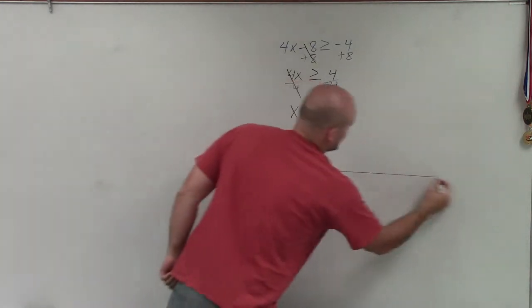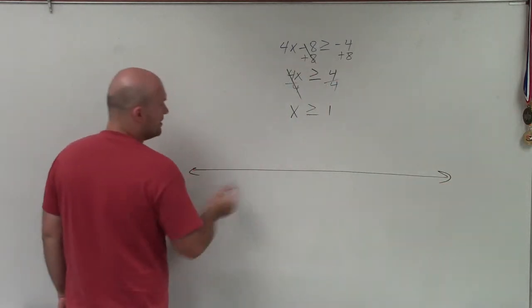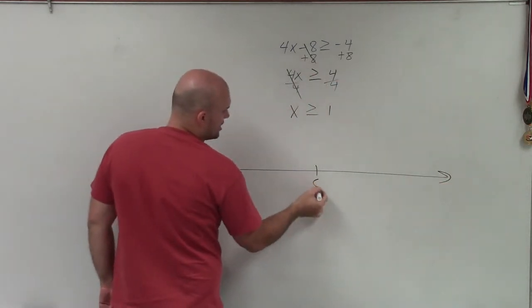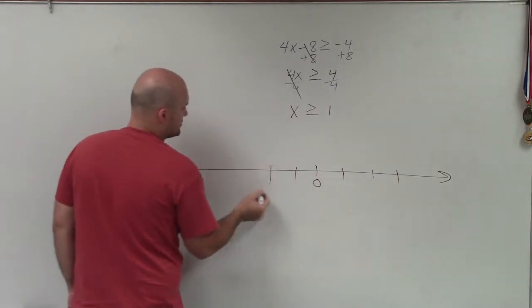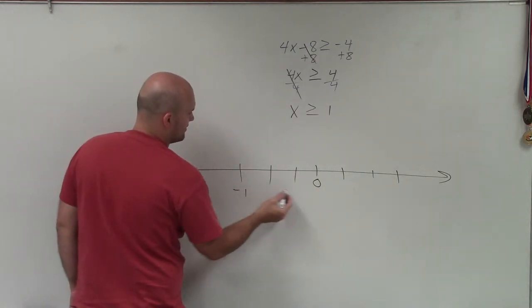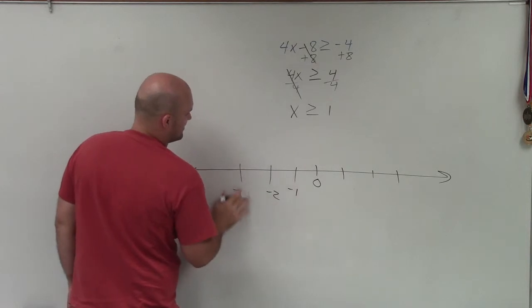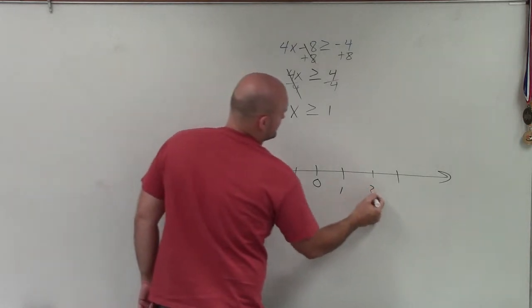Now, to graph this, I'm going to take my number line. We can see it's at 1. So I'm going to start at 0. And I'll just do 1, 2, 3, negative 1, negative 2, negative 3, 1, 2, 3.